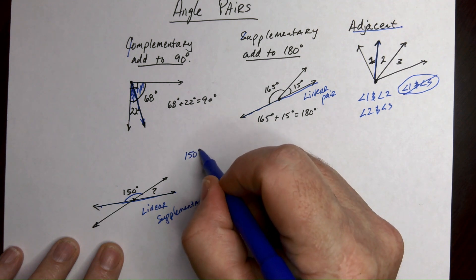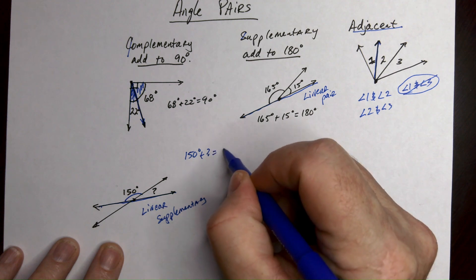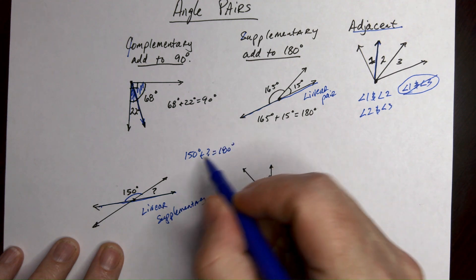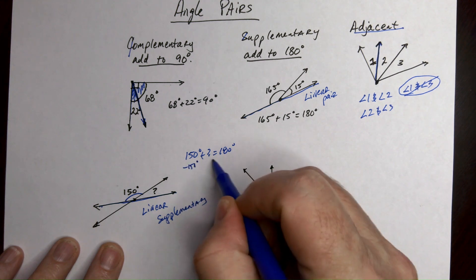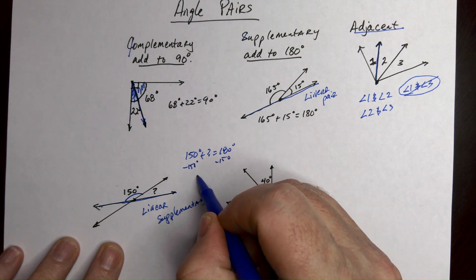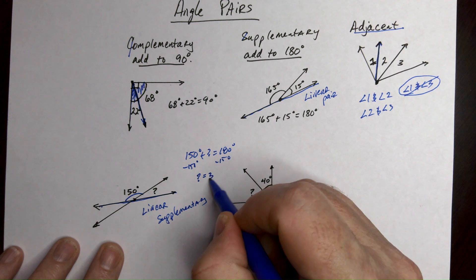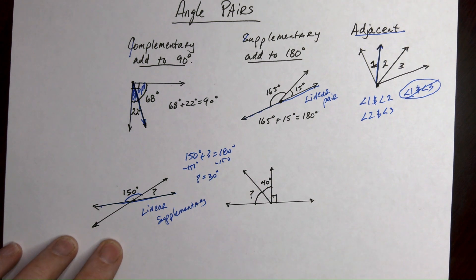So 150 plus what equals 180? You could probably do it without writing it out but if you couldn't figure it out you just write that equation and then you would solve. So the question mark is going to be equal to 30 degrees. See how that works?